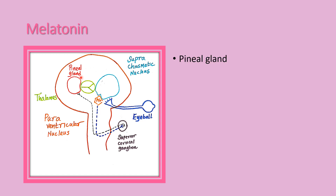Melatonin is produced from tryptophan — tryptophan is the main source of melatonin. Tryptophan is converted to serotonin, and serotonin produces melatonin.